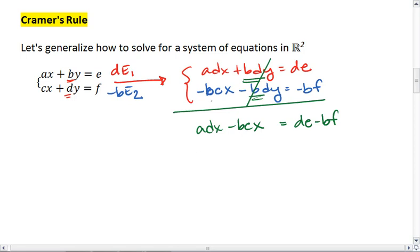A little bit of factoring, because remember I want to solve for x, gives me X times AD minus BC equals DE minus BF. X equals DE minus BF all over AD minus BC.